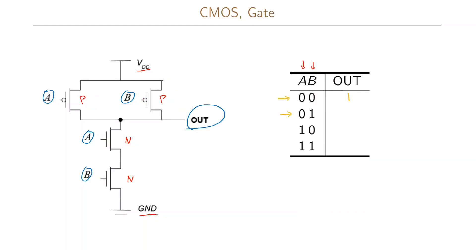Moving to the next row where A is zero and B is one: since A is zero, the P transistor with input A is conducting, but the P transistor with input B will be an open switch. For the N-type transistors, the one with input A will not be conducting since A is zero, while the one with input B will be conducting. So we again have a short circuit between the voltage supply and the output with no connection to ground, giving us an output of one.